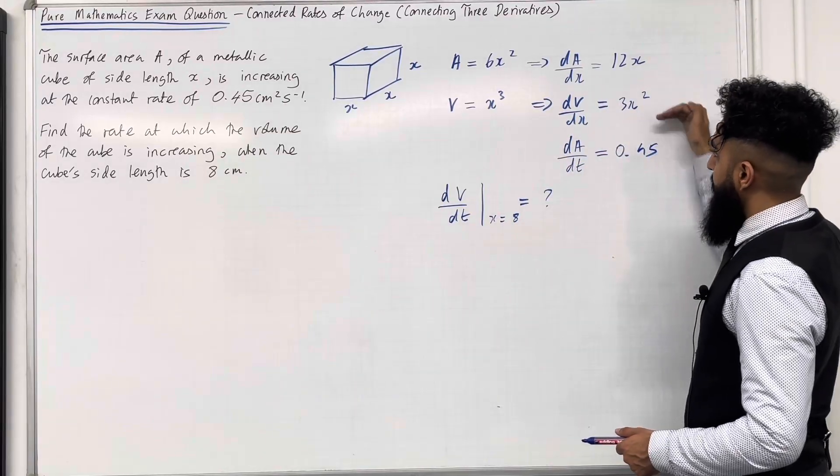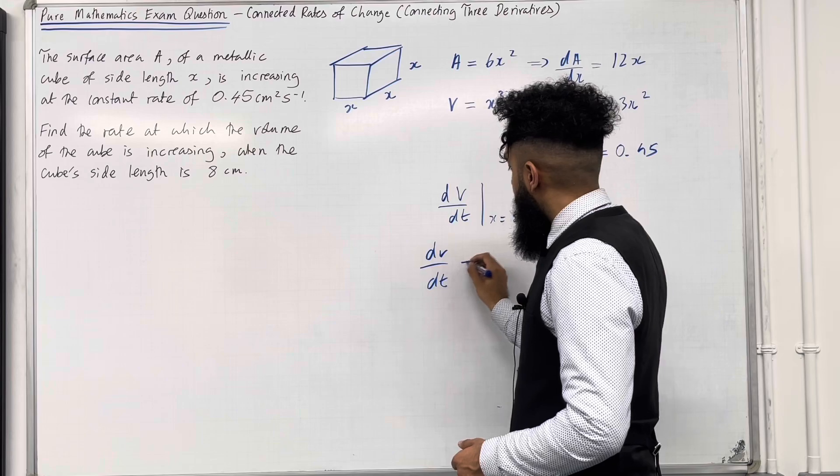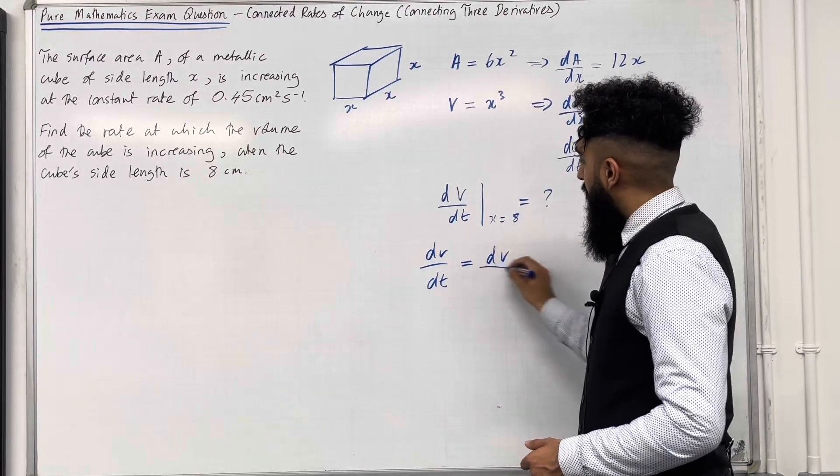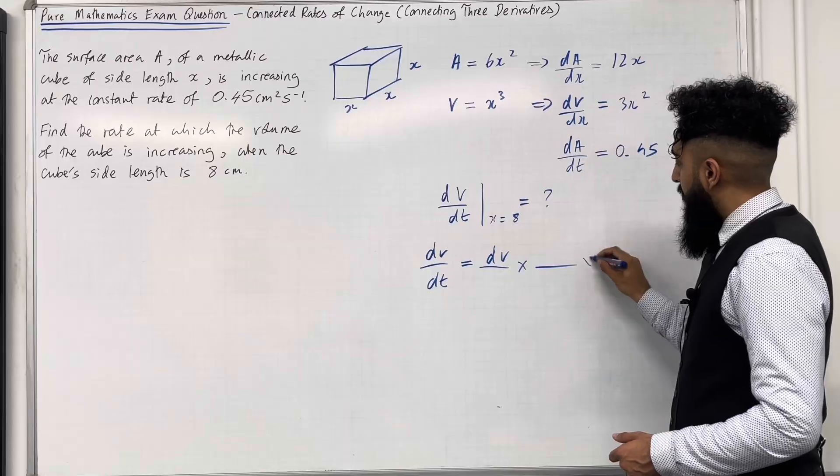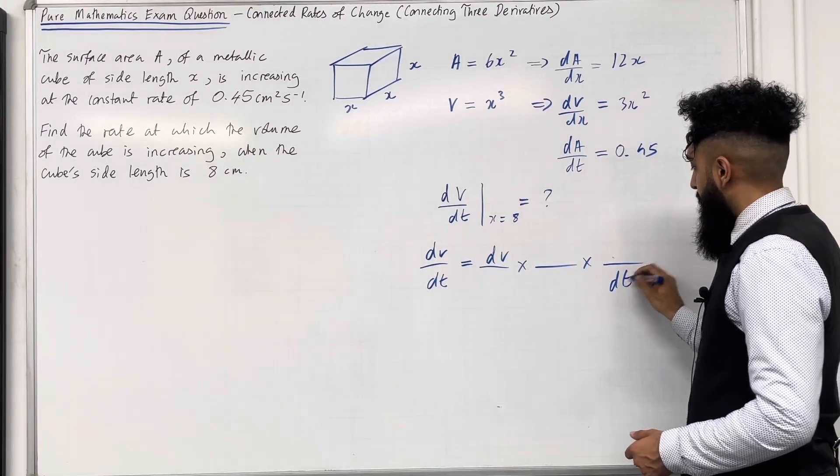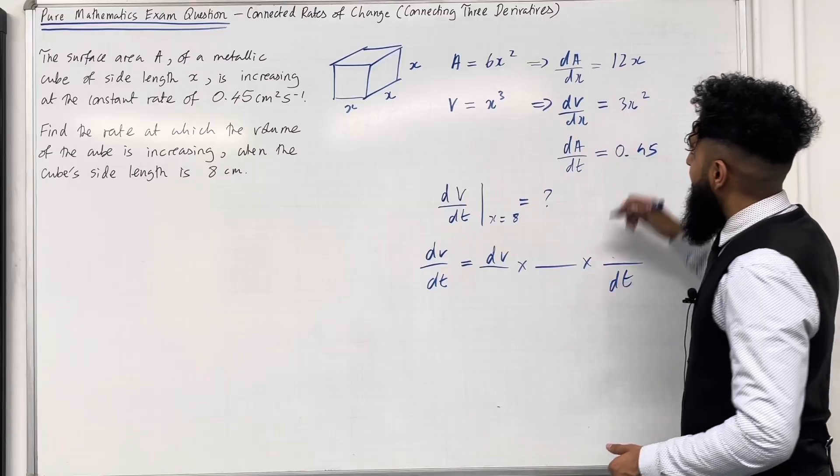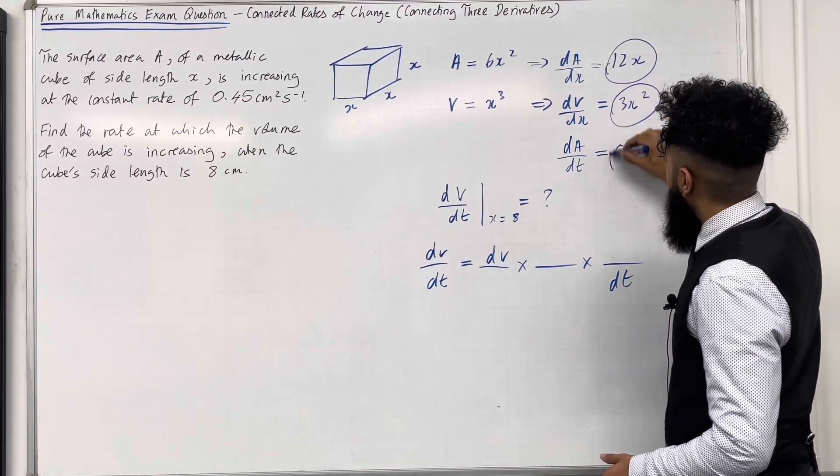I'm connecting three derivatives. So to work out dV over dt, I must do dV over blank multiplied by blank over dt. Right, so I've got dA over dx, dV over dx, and dA over dt.